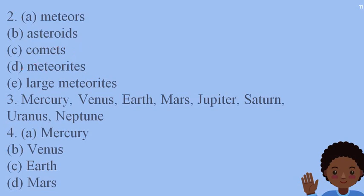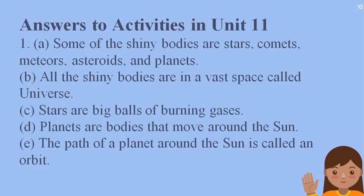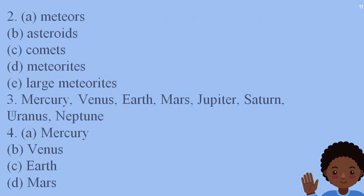Now the third part: a body with a large glowing head and tail — the head and tail are both glowing. We have also read this. What is this called? It is called a comet. Okay, now we will come to Part D.